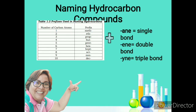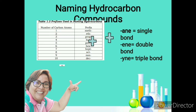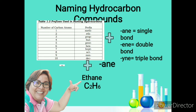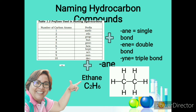Another example is the use of eth. Eth means there are two carbon atoms. Adding the suffix -ane for a single bond gives us ethane. Ethane has a chemical formula of C2H6 — two carbon atoms and six hydrogen atoms. Its structural formula shows two carbon atoms, each bonded with hydrogen atoms.